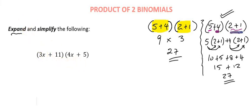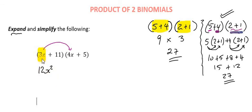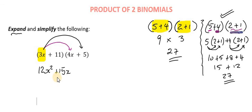We're going to multiply this binomial by this binomial using the distributive law. We take the 3x and multiply it by 4x. The 3 times 4 gives us 12, and x times x gives us x squared, so we get 12x squared. Then we take the same 3x again and multiply it by 5, which gives us 15x.